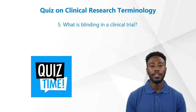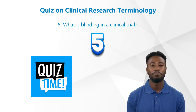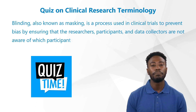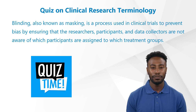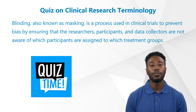Question 5: What is blinding in a clinical trial? Blinding, also known as masking, is a process used in clinical trials to prevent bias by ensuring that the researchers, participants, and data collectors are not aware which participants are assigned to which treatment groups.